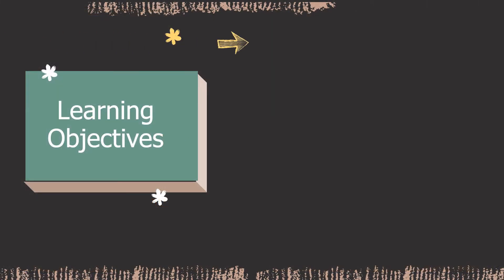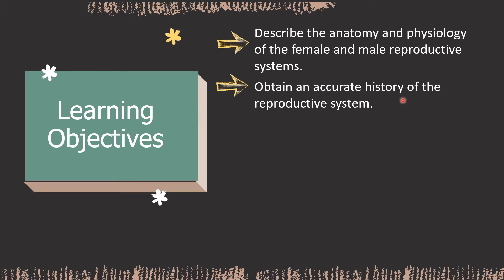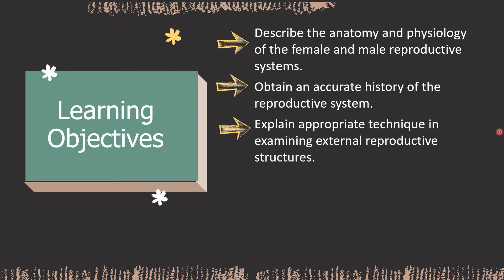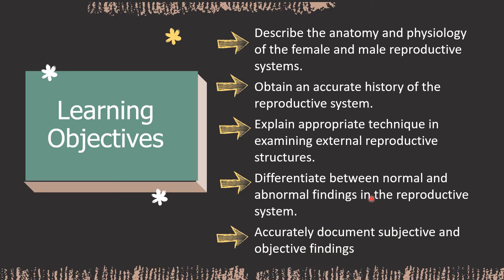These are the learning objectives. At the end of this presentation, the student will be able to describe the anatomy and physiology of the female and male reproductive systems, obtain an accurate history of the reproductive system, explain appropriate technique in examining external reproductive structures, differentiate between normal and abnormal findings, and accurately document subjective and objective findings, as well as create programs for health promotion.